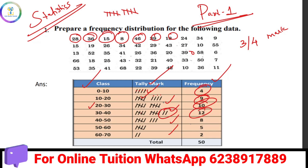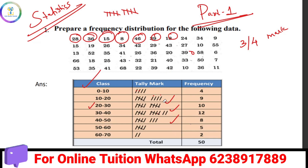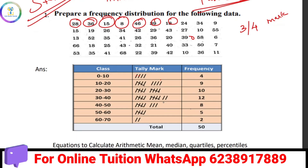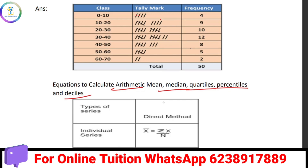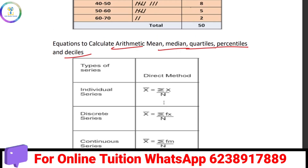Then the total frequency column total is 80. We have 80 observations. We have to take a look at the frequency distribution or frequency array. We also need to look at the arithmetic mean calculation, median calculation, quartiles, percentiles, deciles. This arithmetic mean calculation is very important.